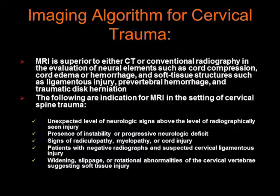MRI is superior to either CT or conventional radiographs in the evaluation of neural elements such as cord compression, cord edema or hemorrhage, and soft tissue structures such as ligamentous injury, prevertebral hemorrhage, and traumatic disc herniation. The following are indications for MRI in the setting of cervical spine trauma.